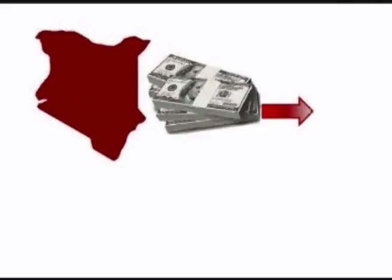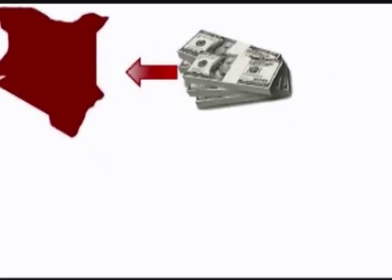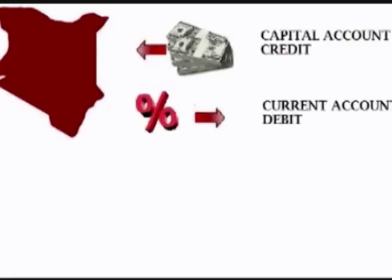Capital that is transferred out of a country for the purpose of investing is recorded as a debit in the capital account. Capital that is transferred into a country for the purpose of investing is recorded as a credit in the capital account. It is important to note that when capital is transferred into a country for investments — for instance, to buy stocks or bonds — it counts as a credit on the capital account.